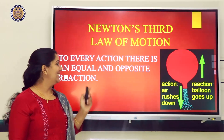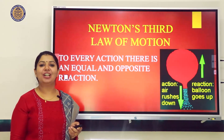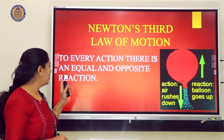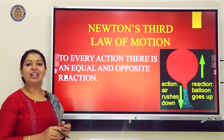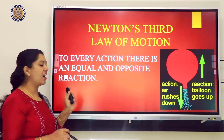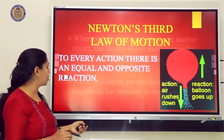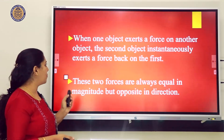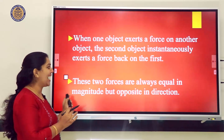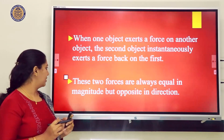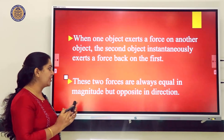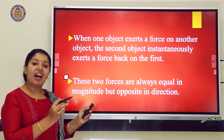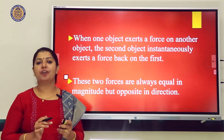Newton's Third Law of Motion states that to every action, there is an equal and opposite reaction. When one object exerts a force on another object, the second object instantaneously exerts a force back on the first. These two forces are always equal in magnitude but opposite in direction.